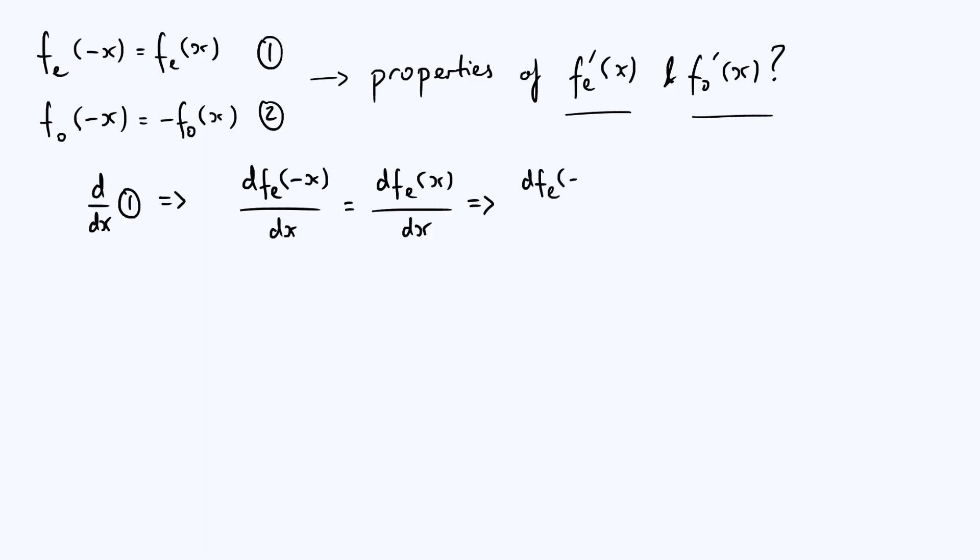And so I'm going to write the left hand side as d fe of minus x by d minus x. Then from the chain rule you have to multiply it by d minus x by dx. And the right hand side of this from our previous step is just, I'm going to write it as fe dash of x. But then if you differentiate minus x with respect to x, you just get minus 1. And so that d minus x by dx bit is just minus 1. What about the derivative at the start of the left hand side? Well, that is just fe dash evaluated at minus x, because the argument of the function and the thing that we're differentiating with respect to now match up. And so we can write the left hand side of our equation as minus fe dash of minus x. The right hand side is still just the derivative fe dash of x.